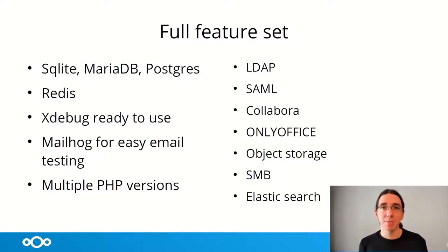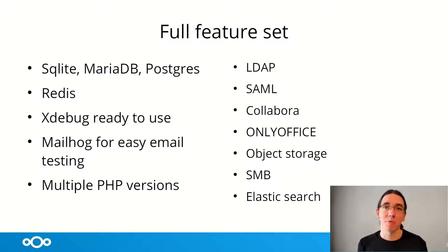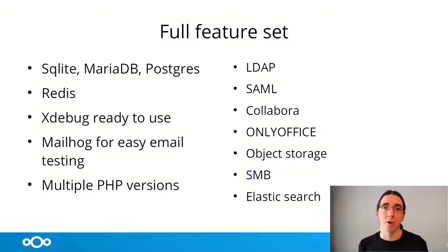Let's have a look at the current feature set. There is support for SQLite, MariaDB, and Postgres. We have a built-in Redis server for caching. It comes with MailHawk, which allows easy testing of sending emails. And it has built-in Xdebug support for profiling, tracing, or debugging your PHP issues. Furthermore, it supports different authentication layers like SAML or LDAP, has integration into Office solutions like Collabora Online or OnlyOffice, and it comes with various storage solutions like SMB or object storage.